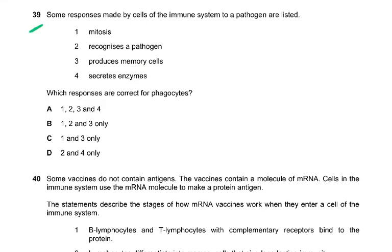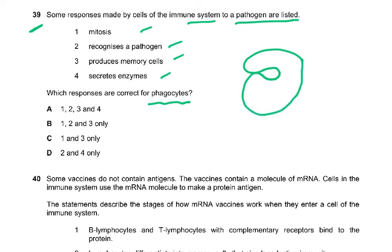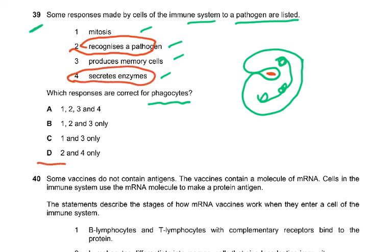Question 39. Some responses made by cells of the immune system to a pathogen are listed: mitosis, recognize the pathogen, produce memory cells, and secrete enzyme. Which responses are correct for phagocytosis? Phagocytes engulf and release enzymes to digest. So only responses 2 and 4 are correct: recognize pathogen and secrete enzyme. Phagocytes do not divide by mitosis and do not produce memory cells.